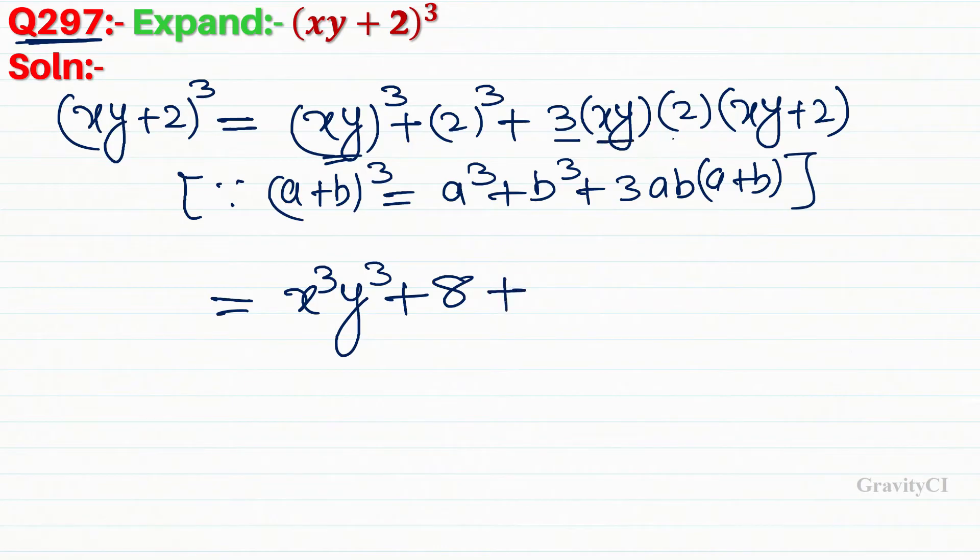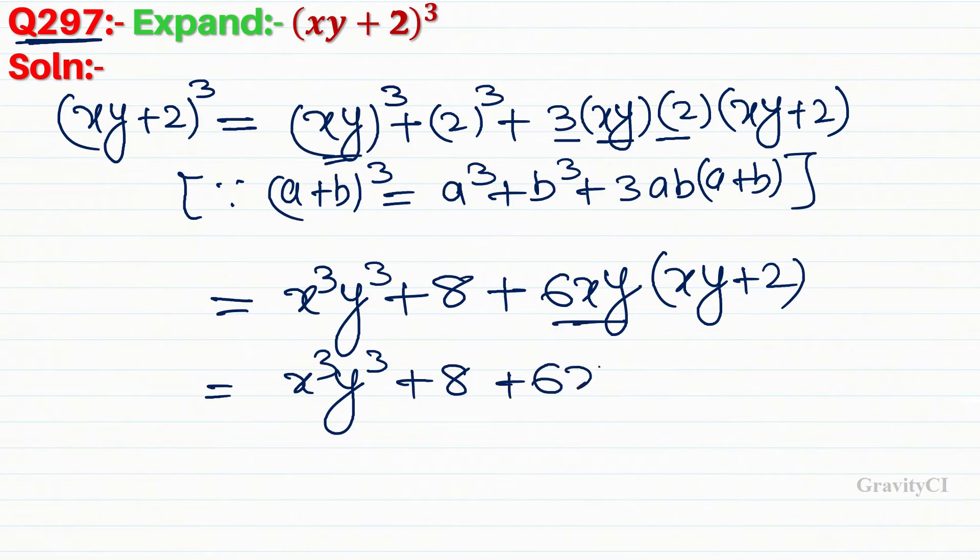First we multiply 3, which gives 6xy(xy + 2). Then we multiply 6xy with both terms, giving 6x²y² + 12xy.